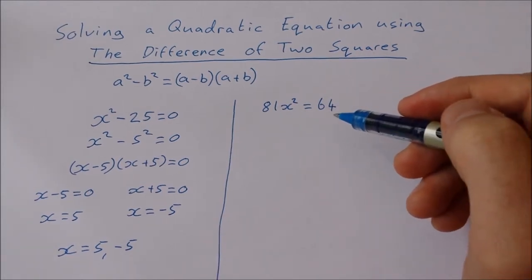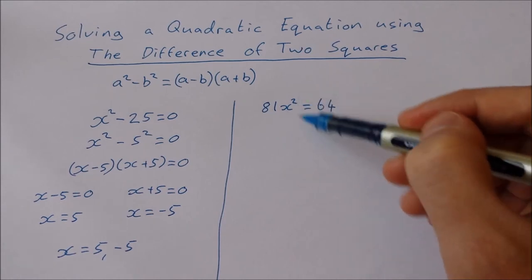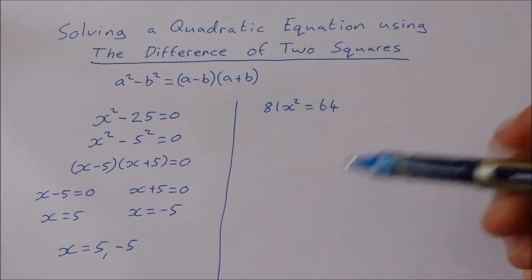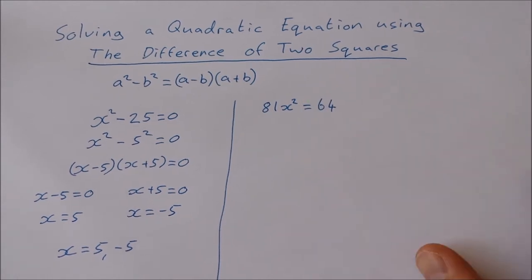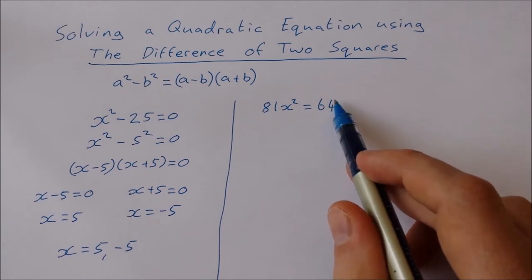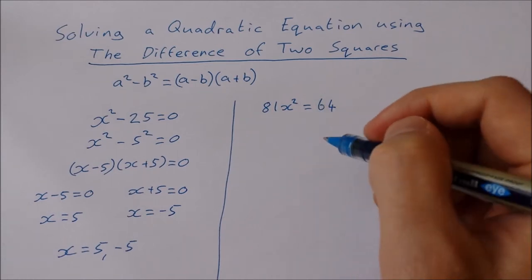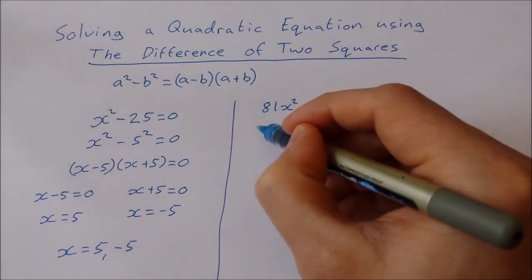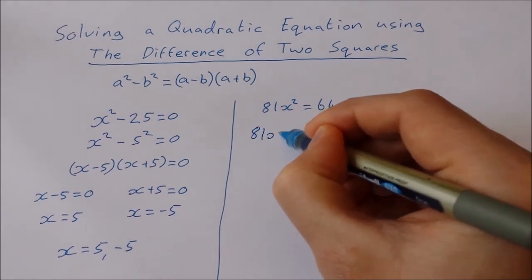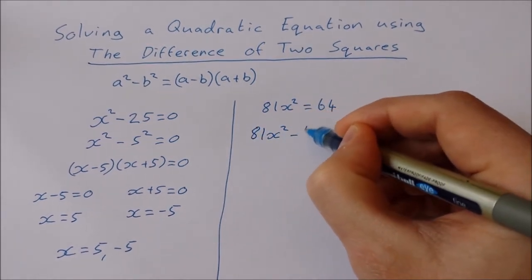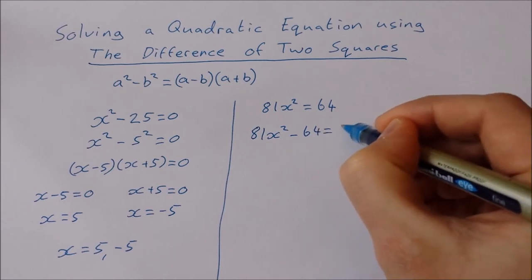This example here now is a little bit more difficult. 81x² equals 64, and I want to use the difference of two squares method, so I need to get 0 on that side there. So I'm going to take 64 from both sides. That will give me 81x² minus 64 equals 0.